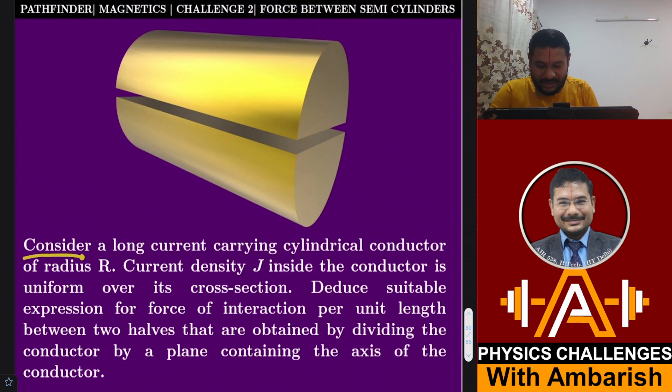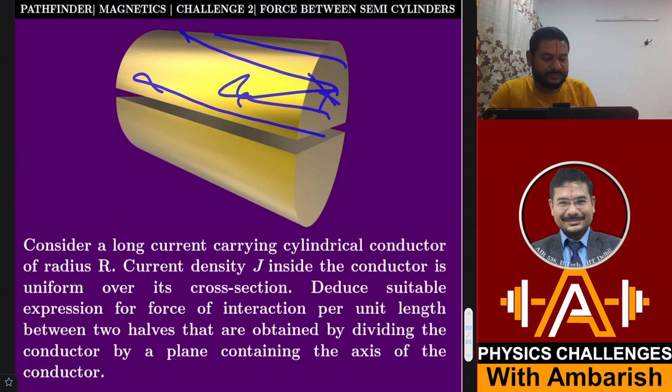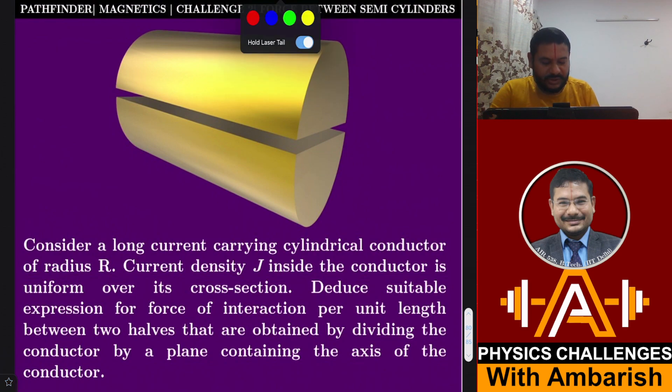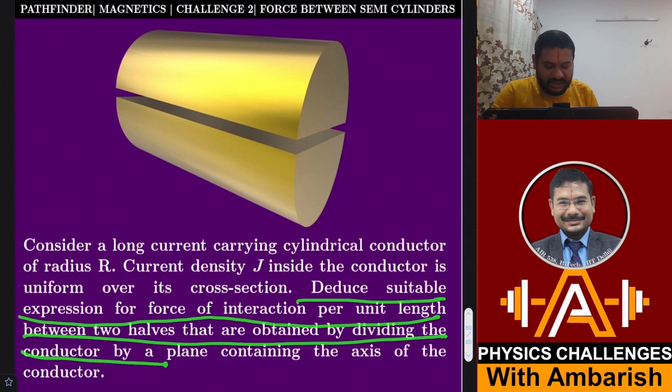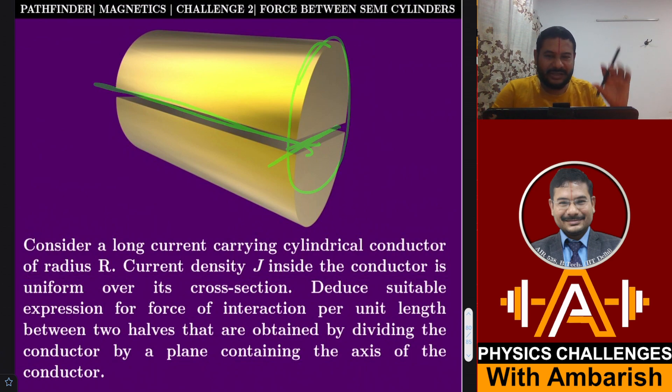Let's look at the problem. Consider a long current carrying cylindrical conductor of radius capital R. Current density capital J inside the conductor is uniform over the cross section, going parallel to the axis. Deduce suitable expression for the force of interaction per unit length between the two halves obtained by dividing the conductor by a plane containing the axis. This is the separating plane showing the two semi cylinders.